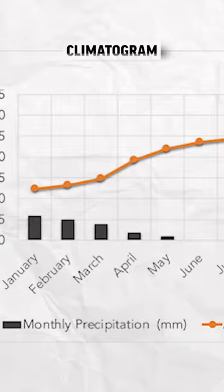On an AP exam, you may see this represented in a climatogram. These are double y-axis graphs that show the temperature and precipitation across the year for a given biome.